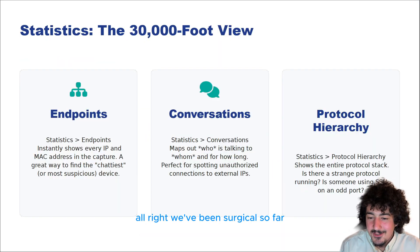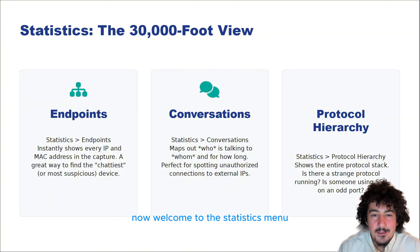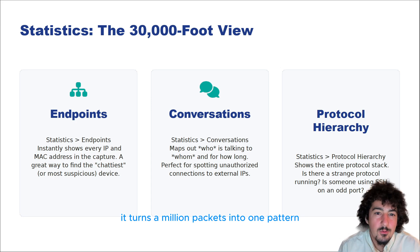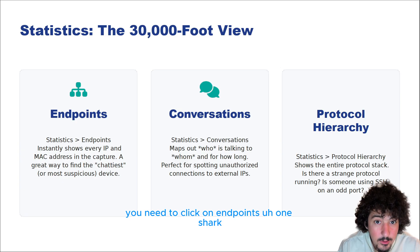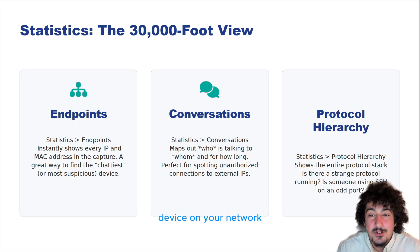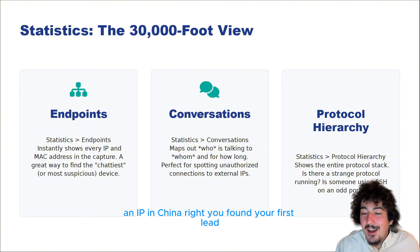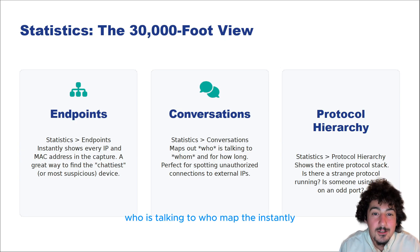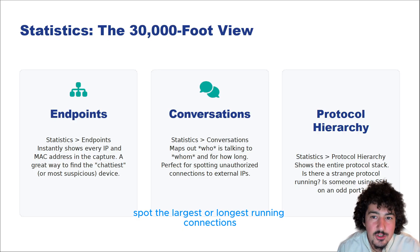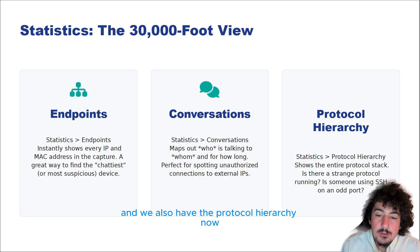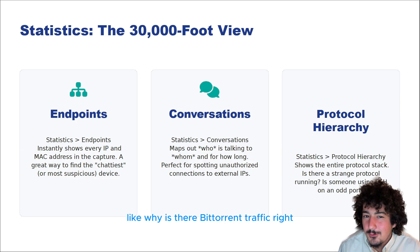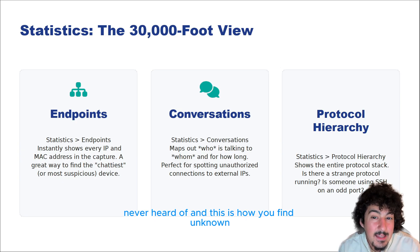What if you don't know what you're looking for? Welcome to the statistics menu — the most underrated part of Wireshark. It turns a million packets into one pattern. Click on Endpoints: Wireshark instantly shows you the chattiest device on your network. For example, why is your printer talking to an IP in China? You found your first lead. Click Conversations — this is the 'who is talking to whom' app — instantly spot the largest or longest running connections. We also have Protocol Hierarchy. You think your network is all known traffic? This shows you everything — like why is there BitTorrent traffic, or why is someone running a protocol you've never heard of? This is how you find the unknown unknowns.